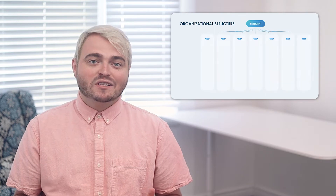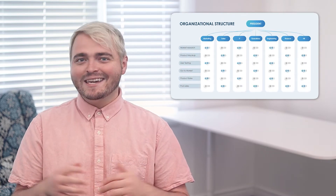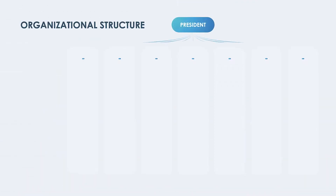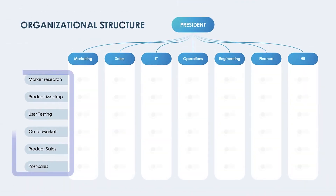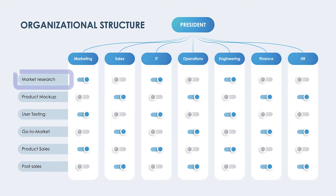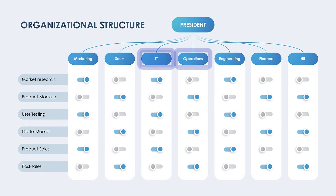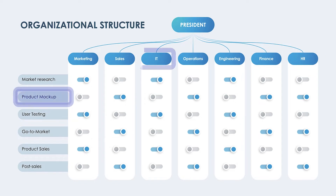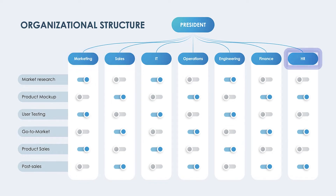Organizational charts typically show who falls under what umbrella and who's responsible for certain tasks. Let's say you're working on a project that entails input from several different teams and each task includes several subtasks. This visualization is helpful to list task names and the department or individual involved. If the task is market research, it would involve the marketing and sales teams, but wouldn't necessarily involve IT, operations, engineers, finance, or HR — so these teams can be toggled on or off. A product mock-up task would involve IT and engineering and could involve sales or marketing, but definitely not HR.